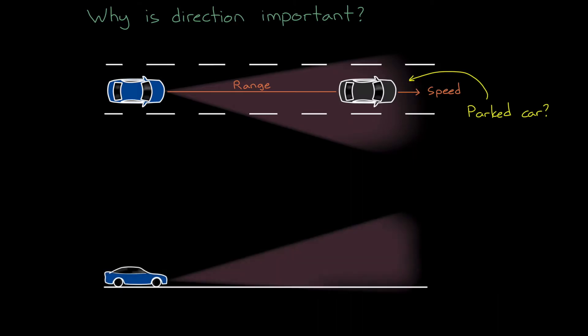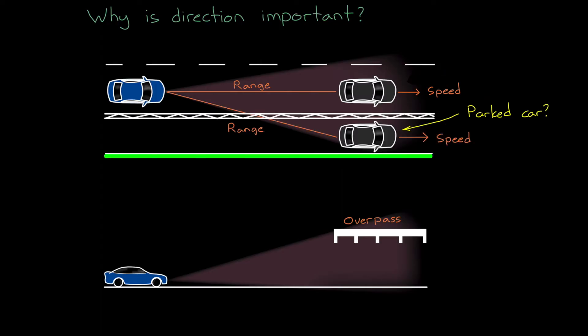But elevation angle determination is equally important. A vehicle would like to know if a stationary object is from a stopped car or from an overpass. And beyond just detecting a single object in azimuth and elevation, the radar system should be able to resolve two or more objects in the same scene and be able to distinguish one from the other.